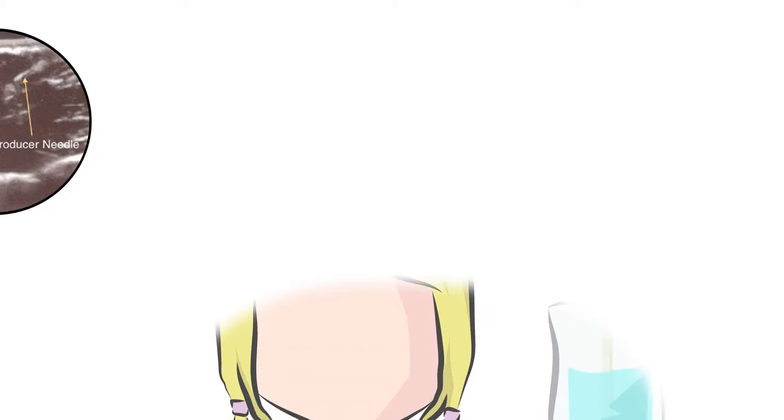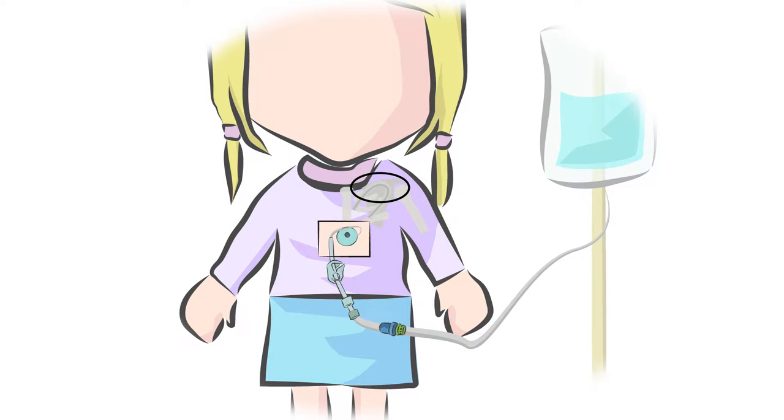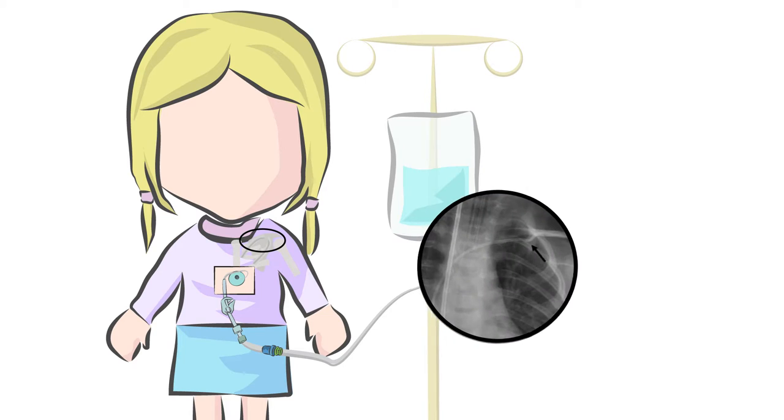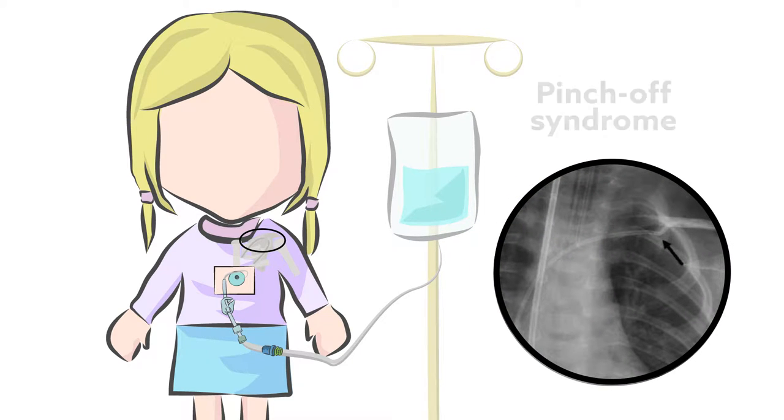One complication of central lines is tube fracture. Internal tubing can snap if the catheter gets caught between the collarbone and the first rib, something called pinch-off syndrome. Although rare, this can block blood flow to the heart and requires immediate removal.